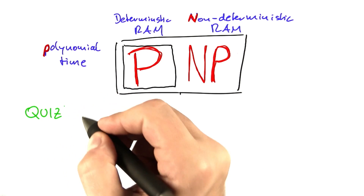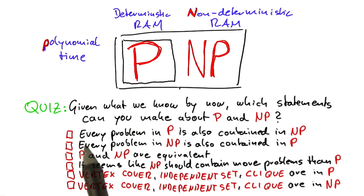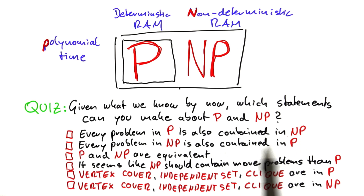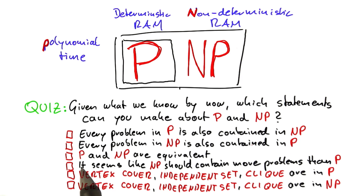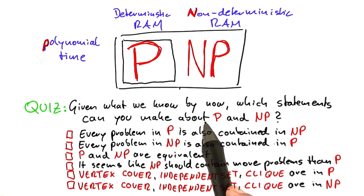Let's do a little quiz to summarize what you know by now. Given all you've learned, what can you say about P and NP? Check which of these statements are true: (1) every problem in P is also contained in NP; (2) every problem in NP is also contained in P; (3) P and NP are in fact equivalent; (4) it seems like NP should contain more problems than P, but we can't say for sure; (5) vertex cover, independent set, and clique are contained in P; (6) those three problems are contained in NP. Please check every statement which, given what we know by now, you should consider to be true.